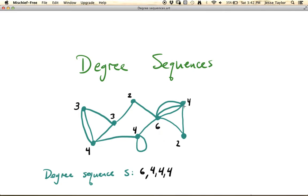We take 6, 4, 4, 4, and then we've got 2 degree 3s and 2 degree 2s, so we round out our sequence with 3, 3, 2, 2.